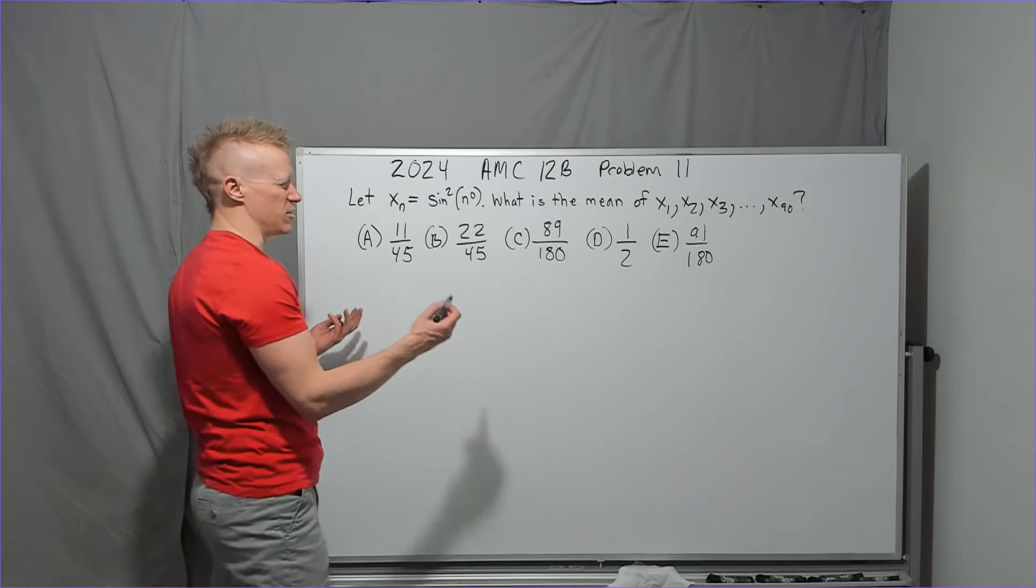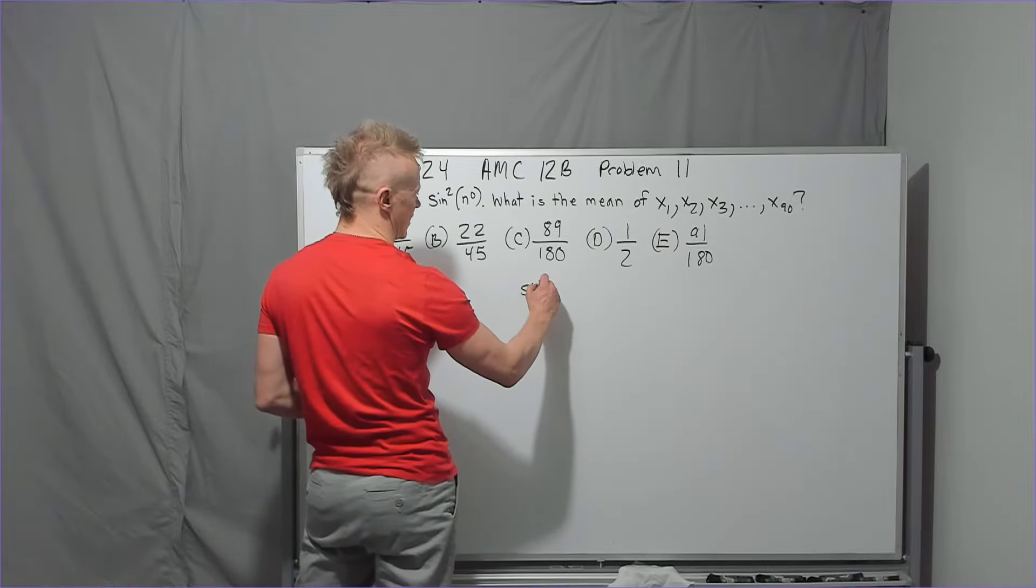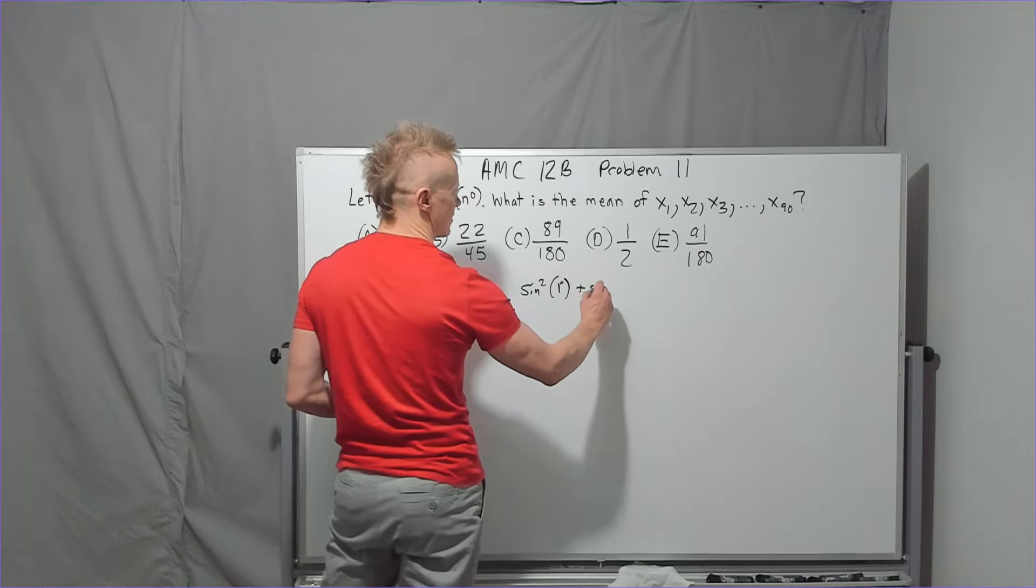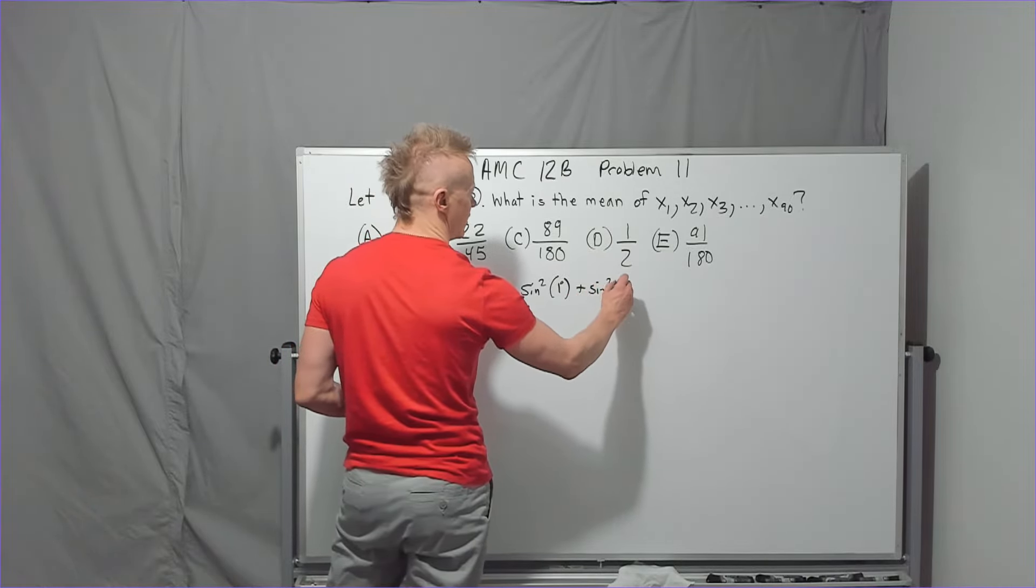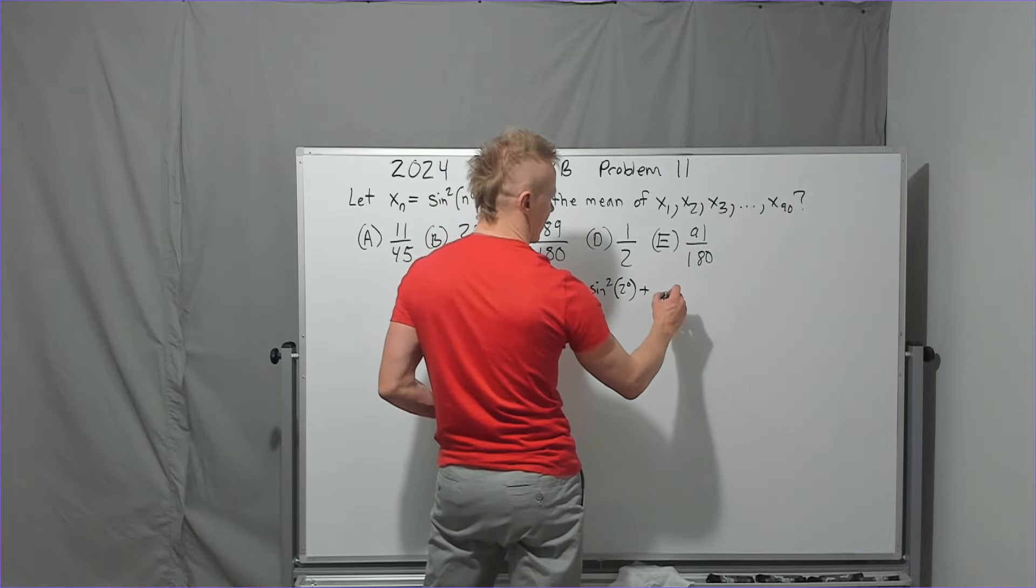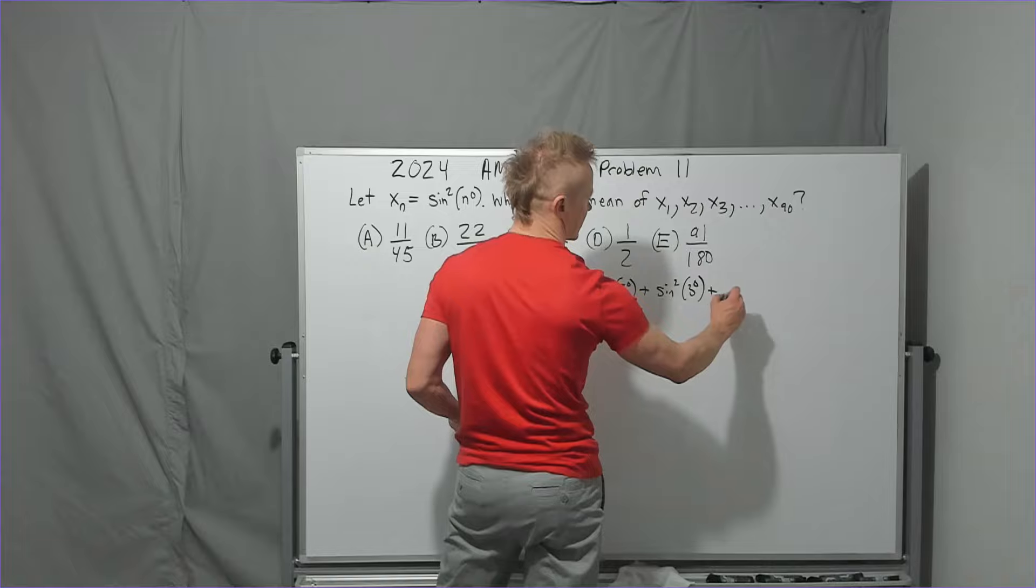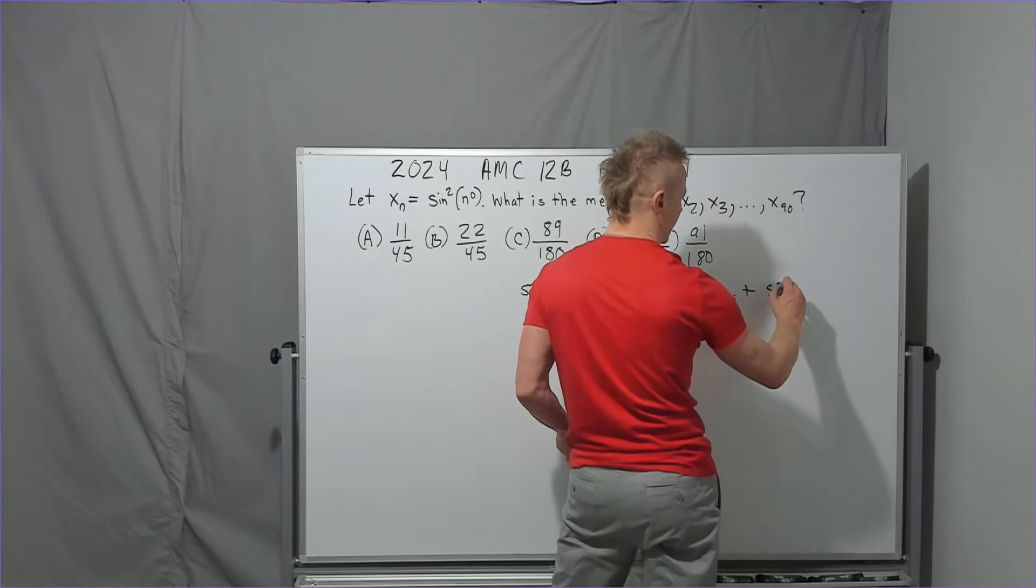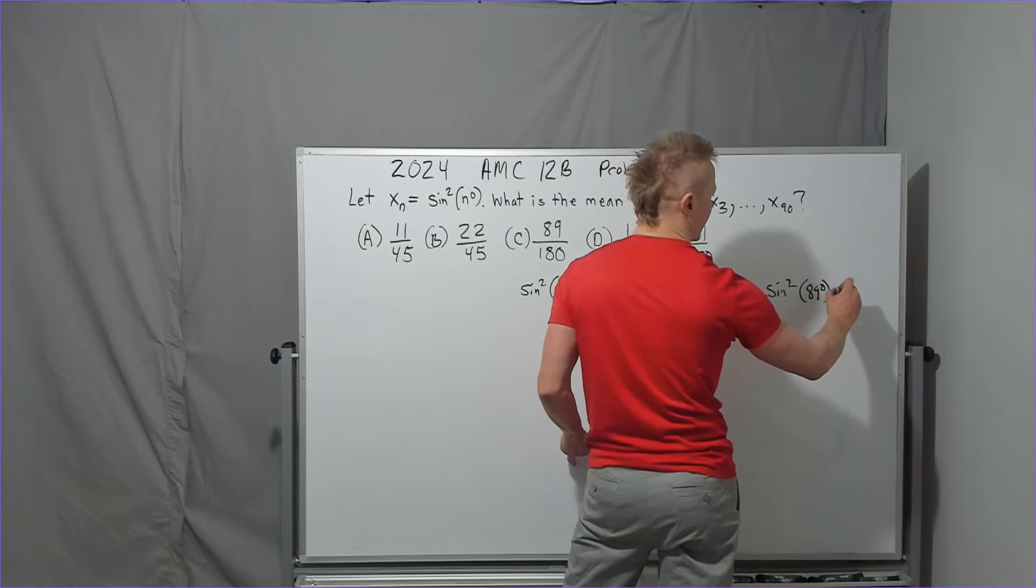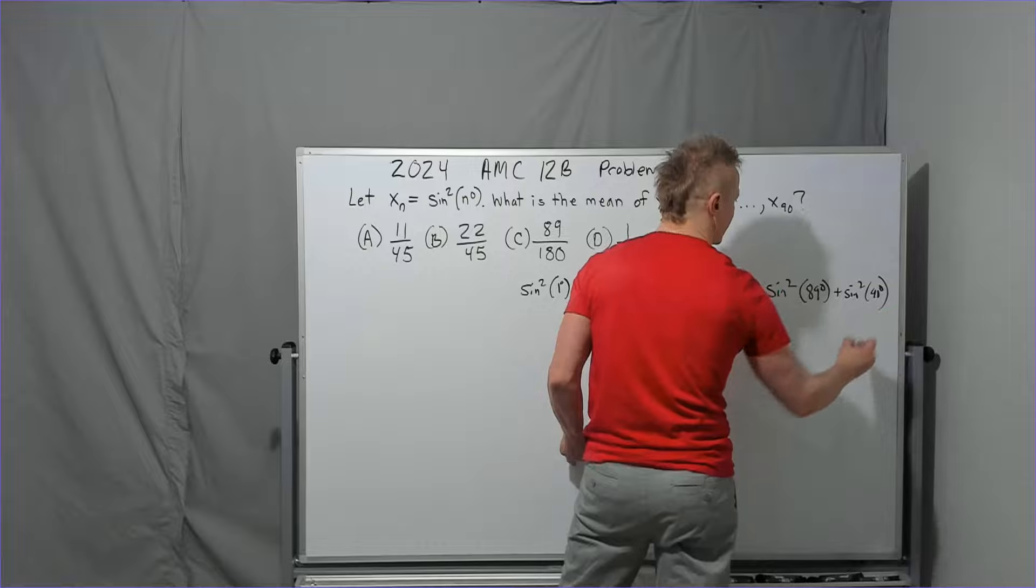So, it's pretty straightforward what you start doing, and then you've got to figure out what you're going to do. You have sine squared of 1 degree plus sine squared of 2 degrees plus sine squared of 3 degrees plus dot dot dot plus, and I'm going to write sine squared of 89 degrees and sine squared of 90 degrees.